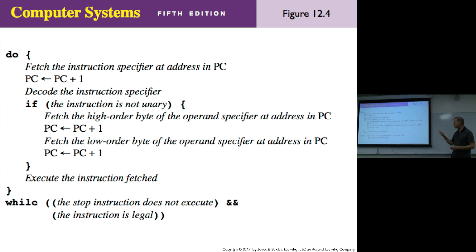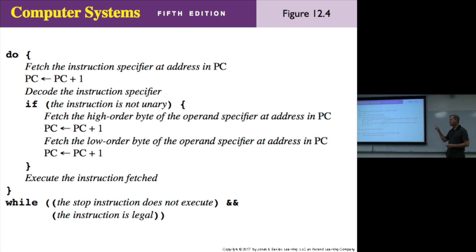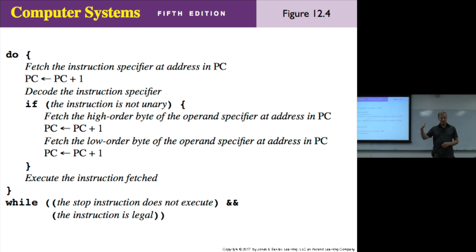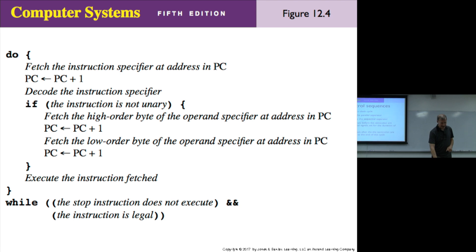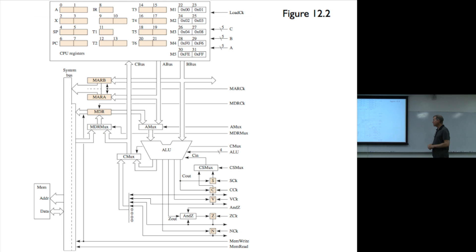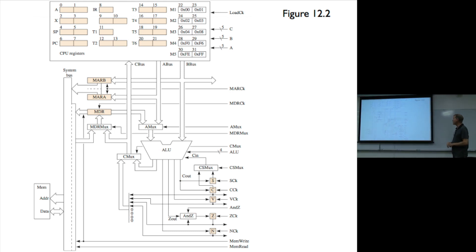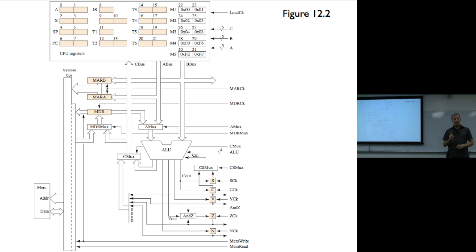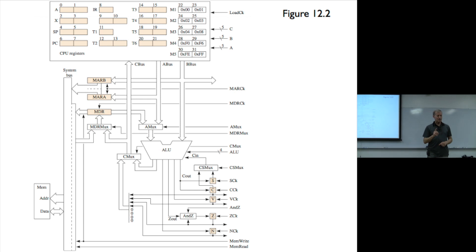We saw how to fetch the instruction specifier at the address in the PC, but we didn't do PC gets PC plus one. That's part of the von Neumann cycle, and that's what we did at the end of last class. So let's quickly finish that out. Here is a recap of figure 12.2, and let's see if we can do the control signals for adding one to the program counter.